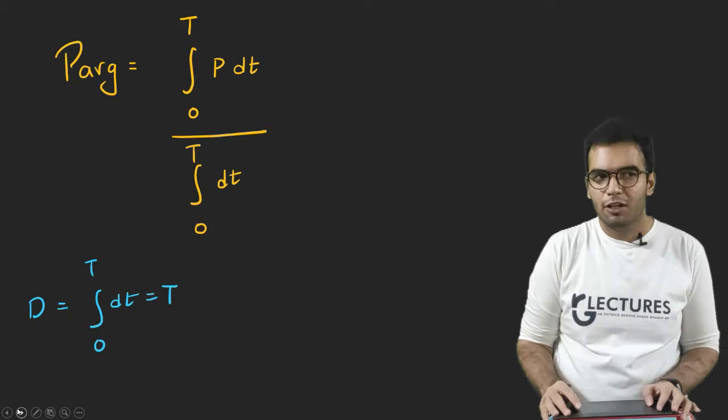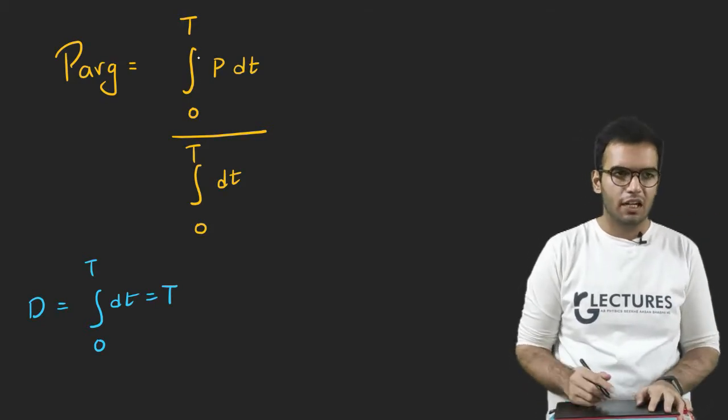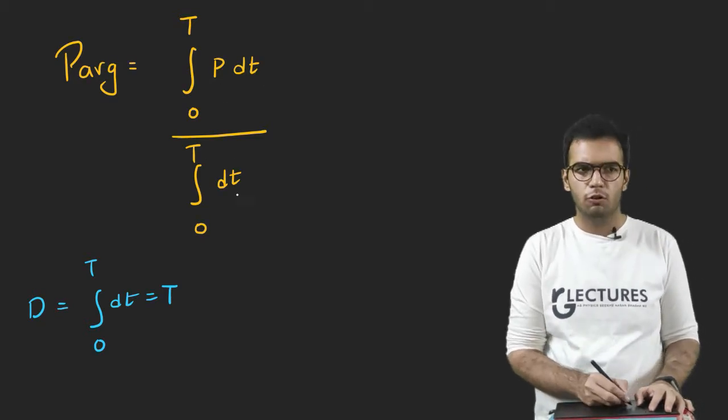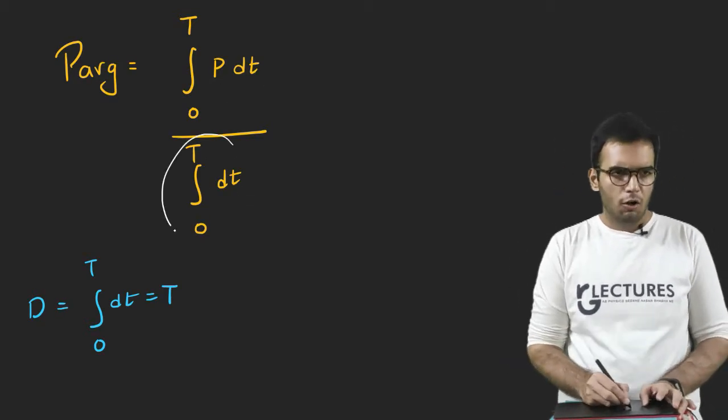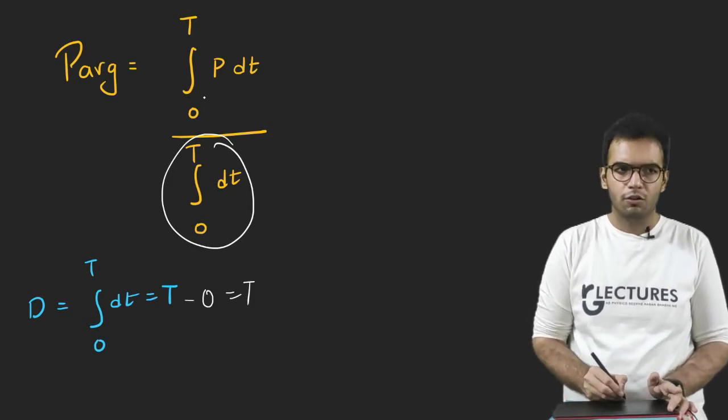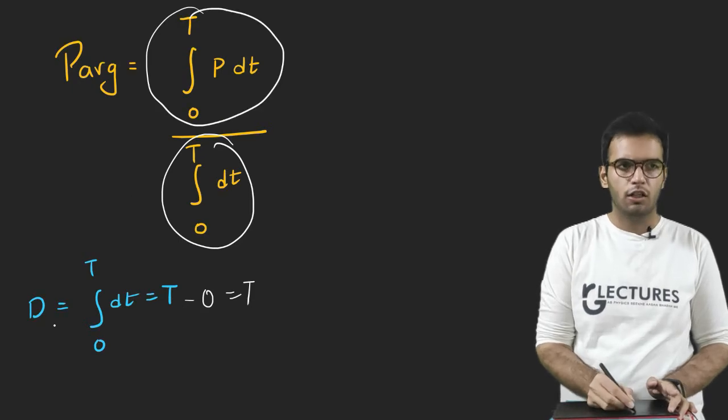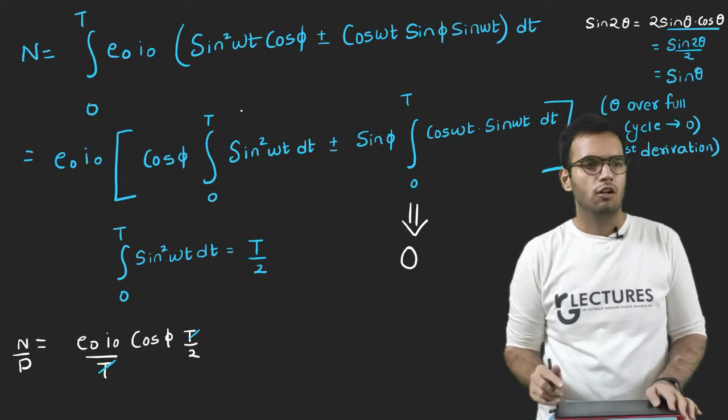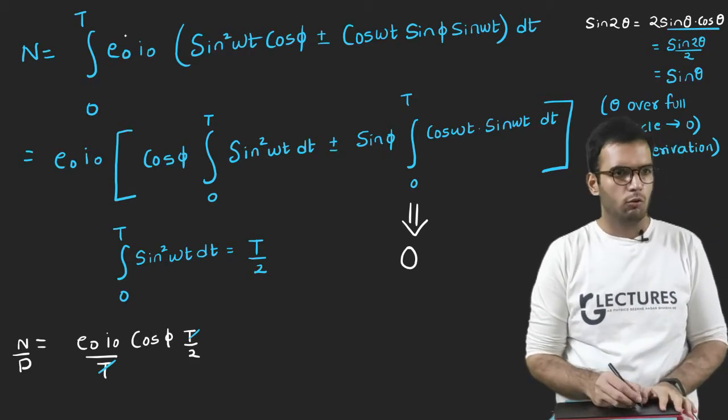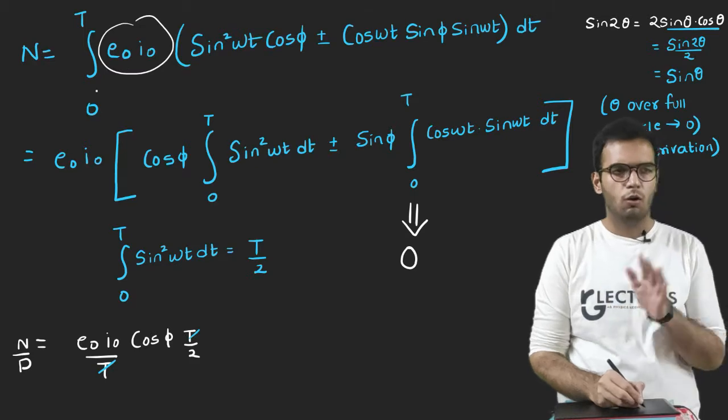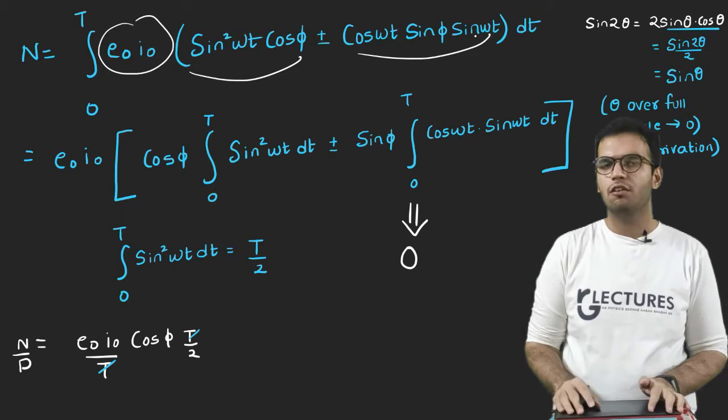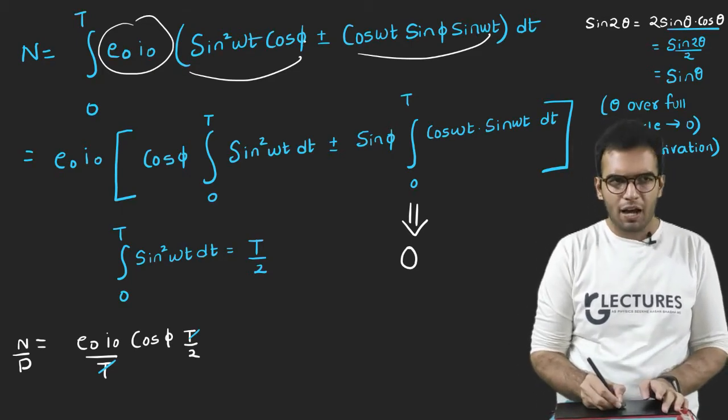Let us calculate the average power. I have told various times that this is the integral if you want to calculate average of any term: 0 to T, the function itself, 0 to T the time. So denominator, if I solve, so denominator integral will be simply t - 0, which is equivalent to T. So let us focus now on the numerator because it is somewhat lengthy.